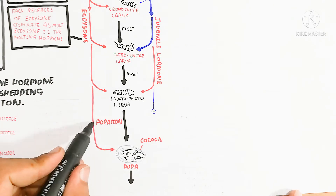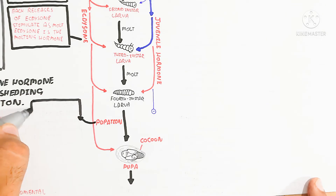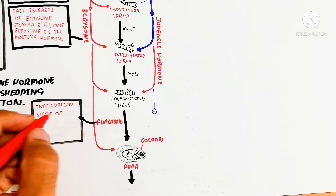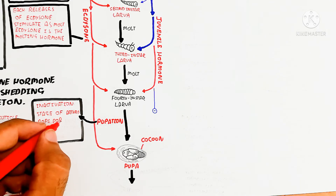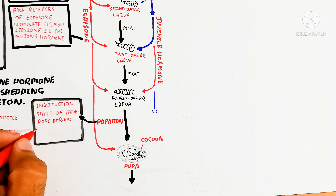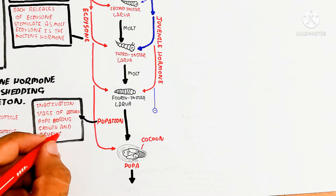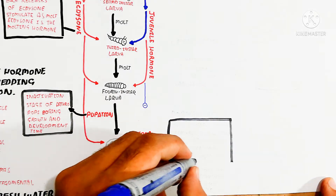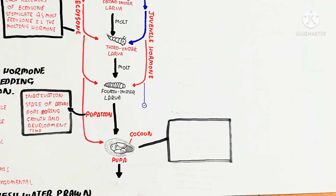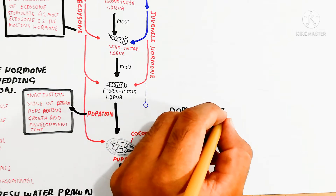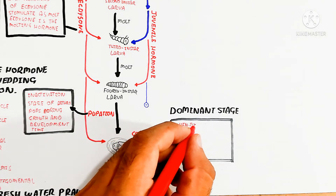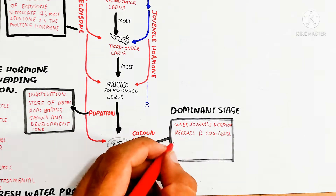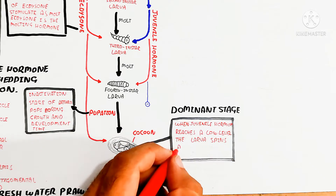For example, pupation will occur. This pupation will produce the pupa, and the pupa is surrounded by a layer known as the cocoon — which is capsule-like — and represents an inactive stage of the arthropod during growth and development, a dormant stage. When juvenile hormone reaches a low level, the larva spins a cocoon and molts into a pupa. The pupa does not produce juvenile hormone, so it metamorphoses into an adult — for example, a butterfly will be formed.